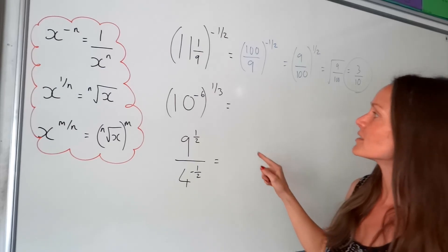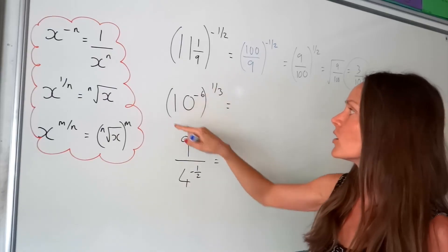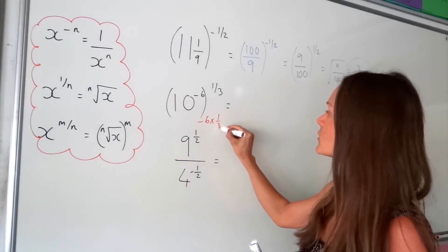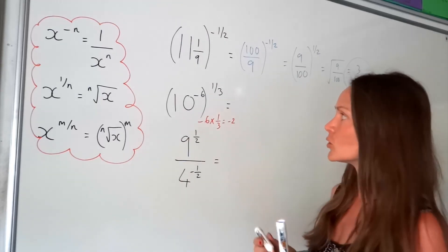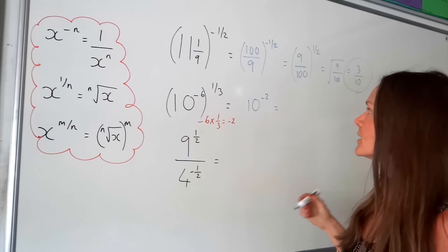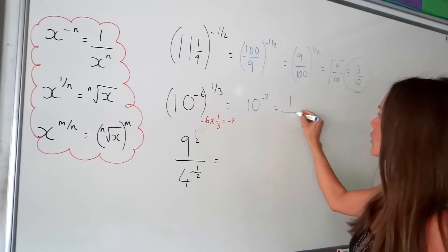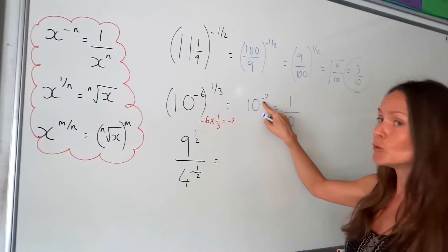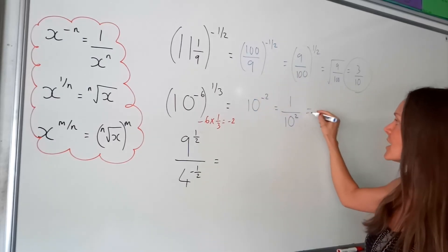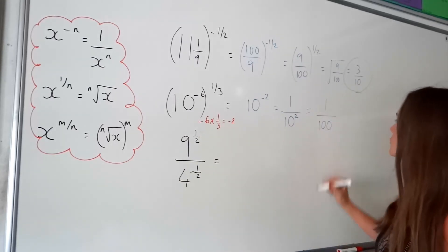This challenge uses a rule from the previous video: when you see two powers with brackets, multiply the powers together. Multiplying negative 6 by one third gives negative 2, so we have 10 to the power of minus 2. The negative power turns this into a fraction: 1 over 10 to the positive 2. The negative disappears once you make the switch, and 10 squared is 100, so the answer is 1 over 100.